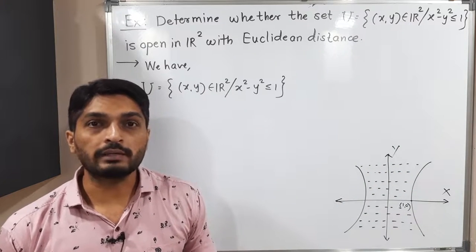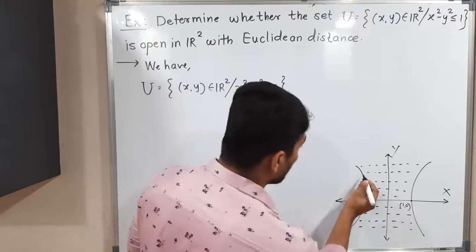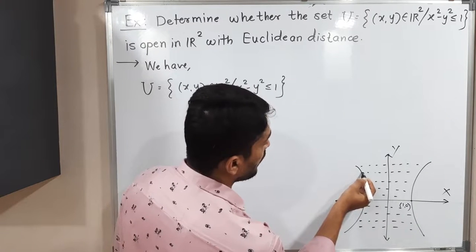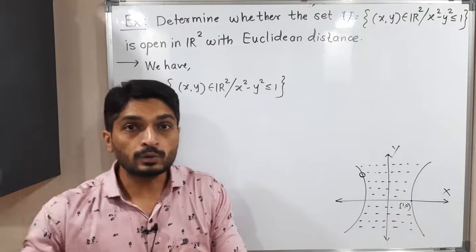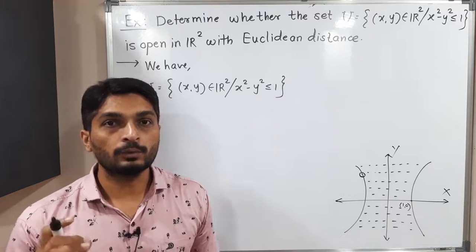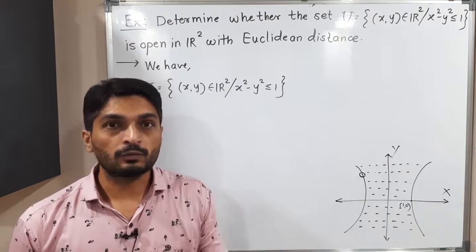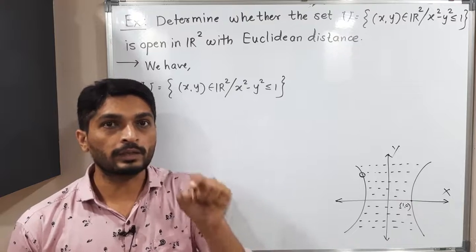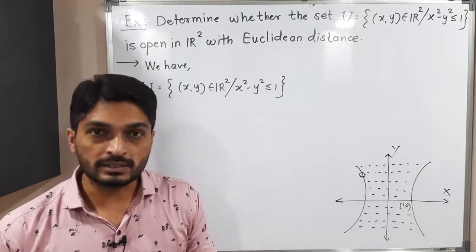What do you think — will it be an open set or not? If you take any point on the boundary and draw any ball around that point, it will definitely contain some points outside set U. So it is not an open set, but we have to prove this. To prove it is not an open set, we find a point and show that for that point, any ball drawn around it will go outside the set.